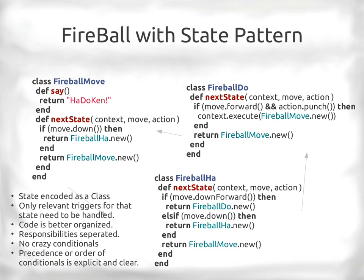With the state pattern, we get more code but each class is coherent and handles fewer concerns. The default fireball class just checks if we pressed down — if so, return the Ha class and move to the next state. The Ha state only looks for down-forward; if it's just down, return to Ha; otherwise return to the initial state. The Do state looks for forward-punch — if found, execute the fireball; in all cases, reset. Each state is a separate class responsible for its own behavior, and you can't accidentally run Ha-state code in the Do state.